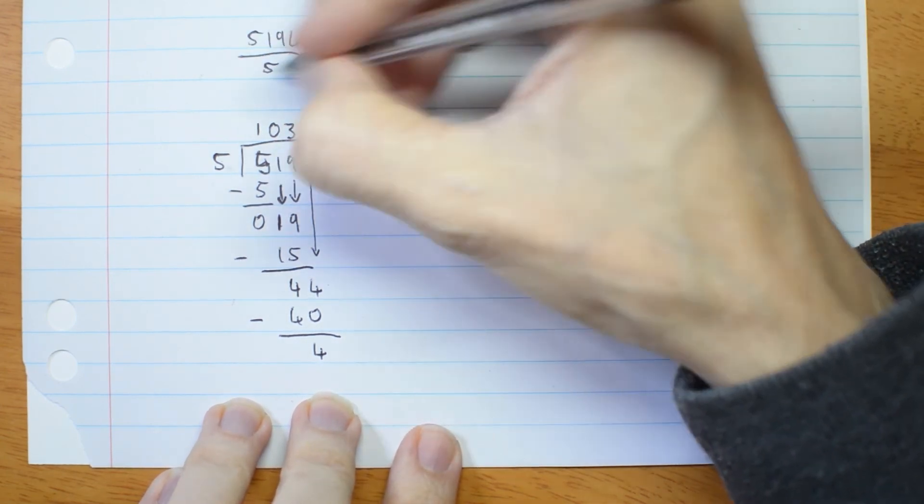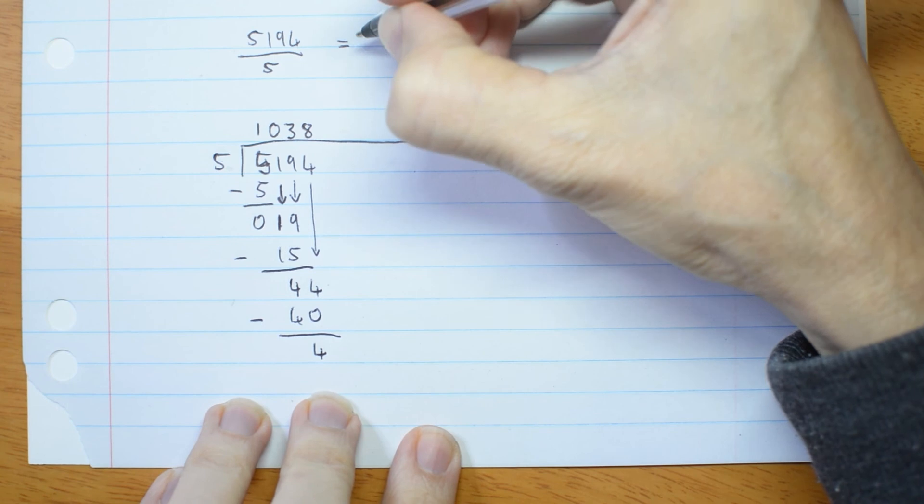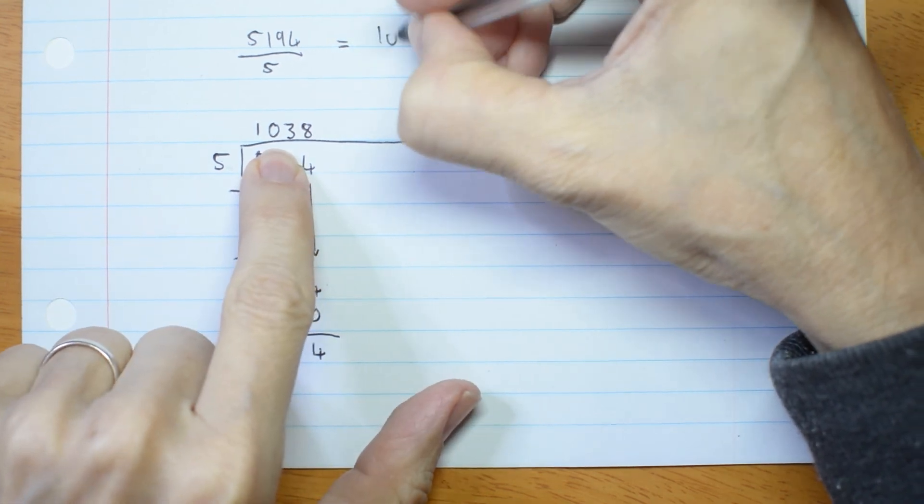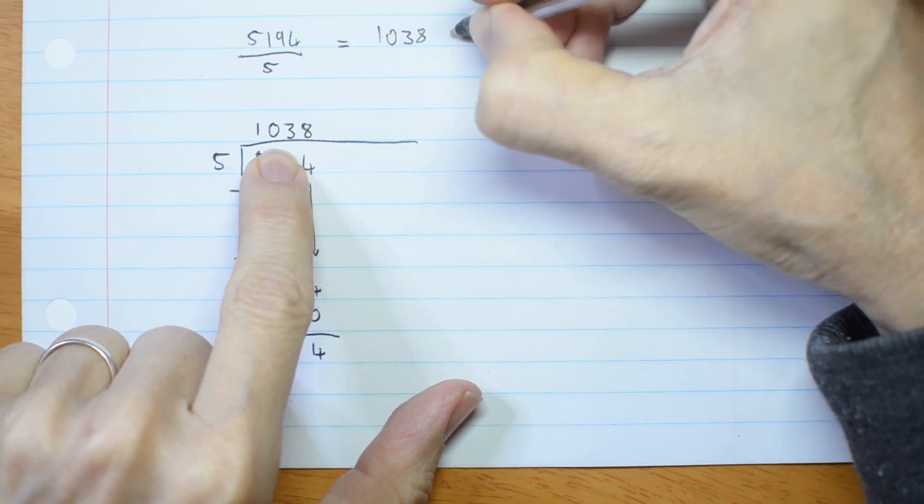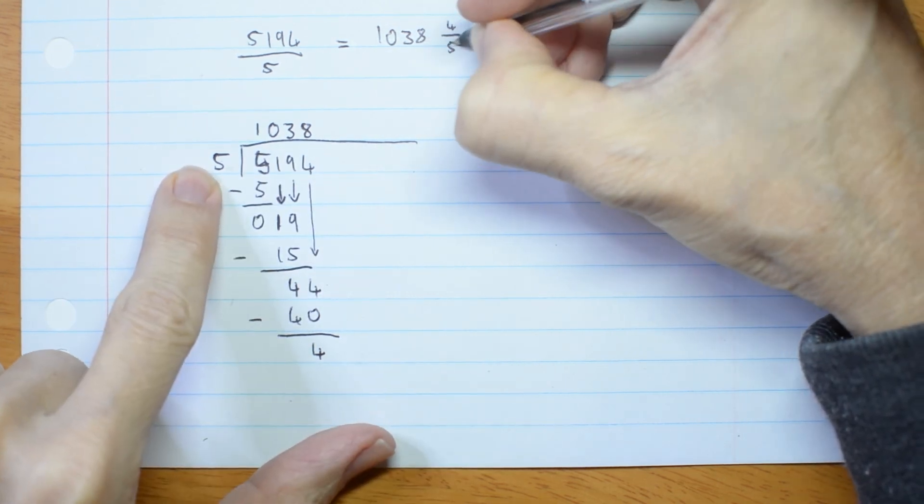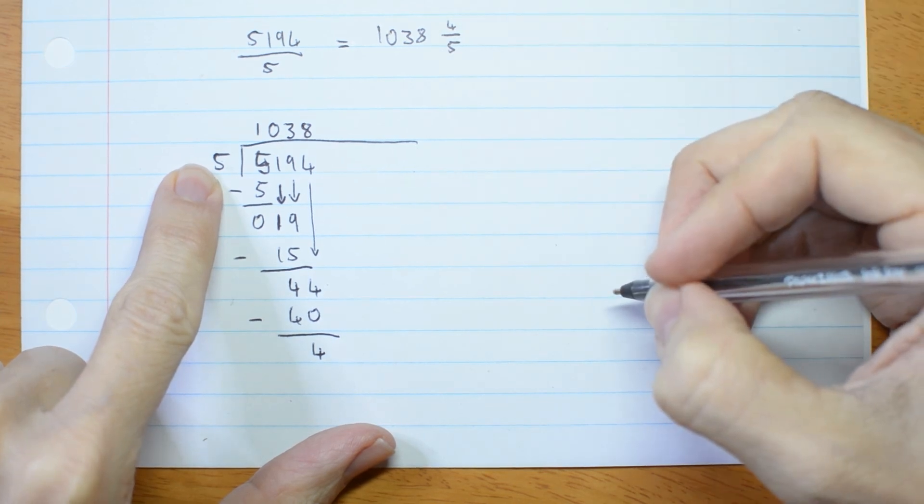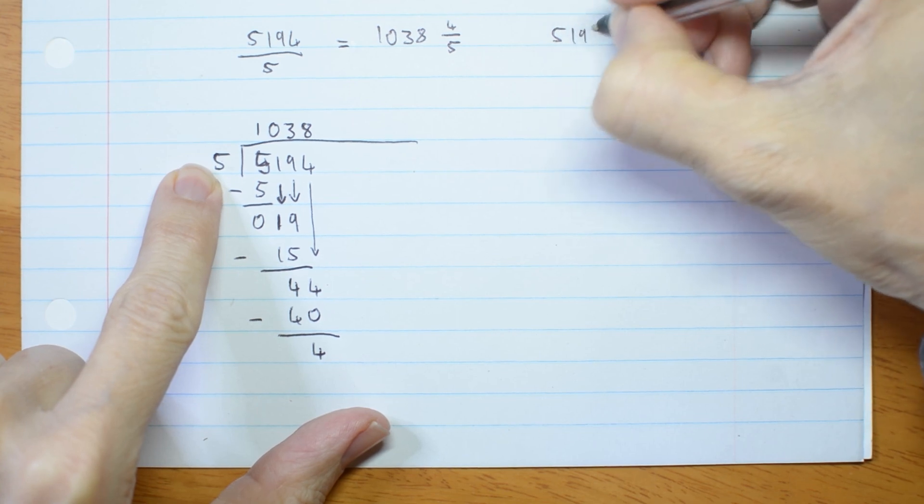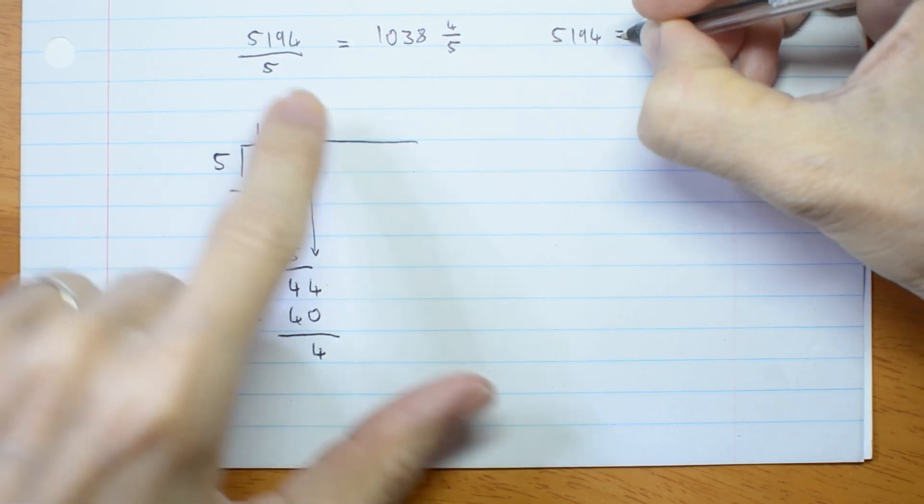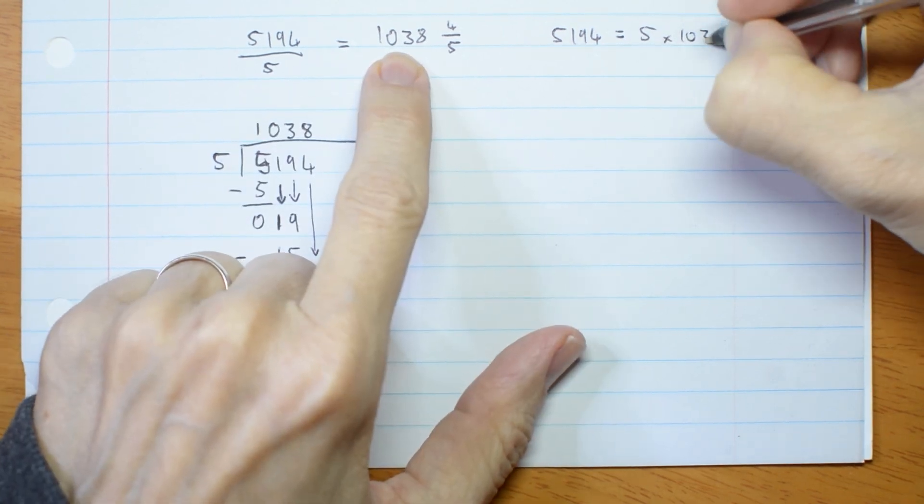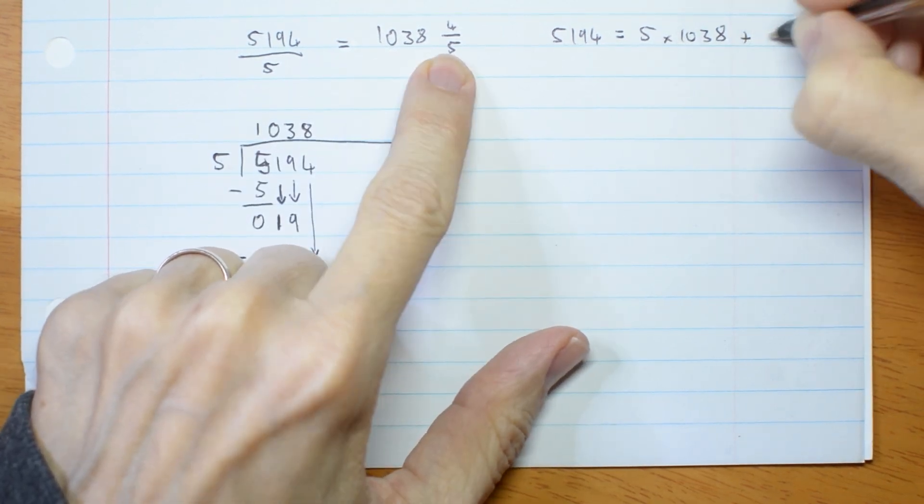So I can write my original division as the quotient 1038 plus the remainder 4 over the divisor. Or I can write it the other way. My dividend is equal to divisor times quotient plus remainder.